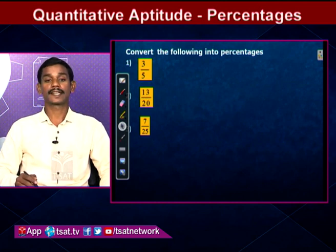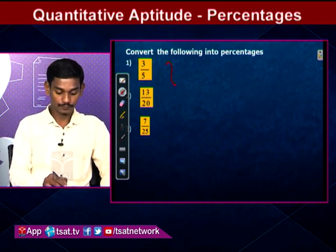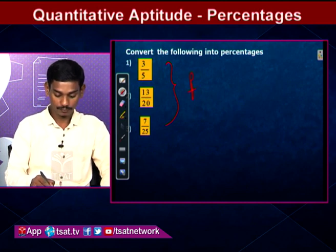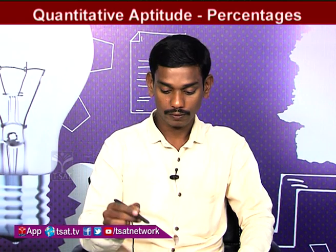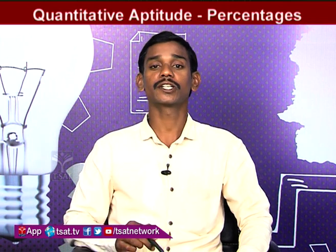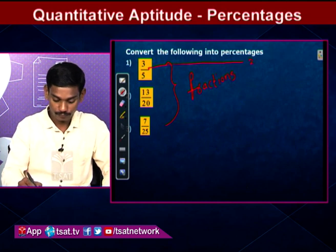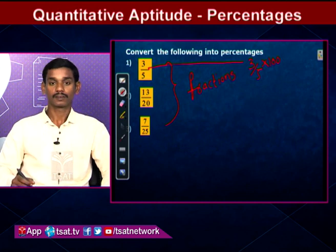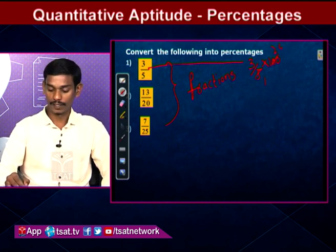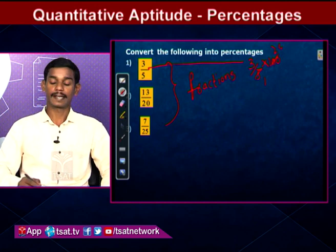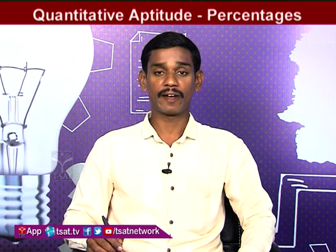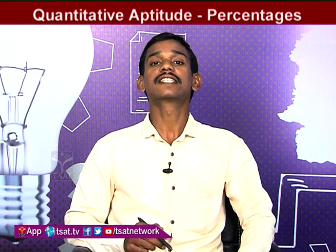Now convert fractions into percentages by multiplying by 100. First: 3/5 — multiply by 100: 3/5 × 100 = 3 × 20 = 60%. So the fraction 3/5 equals 60 percent.